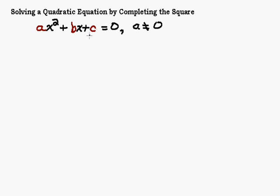The a, b, and c are in different colors because those are going to be your coefficients — there are going to be numbers there. And I have x as my variable, but it could be anything. Basically it's going to be something that has an x squared in it. If a was equal to zero, then this x squared term would be zero, that'd be gone, and then we'd have a linear equation. So to be a quadratic equation, a cannot be zero.